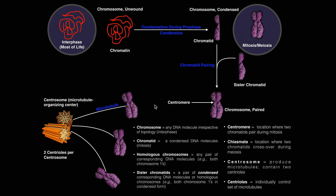Hopefully this video gave you a good understanding of the terms and when they are used. A lot of the terms that refer to DNA just differ based on what phase of the cell cycle you're in: if you're in interphase, it's chromatin; if it's during cell division, it's a chromatid — condensed and wound up. But remember, when you see the term chromosome, that is just any molecule of DNA, regardless of shape or topology. Please make sure to like this video and subscribe to my channel for future videos and notifications. Thank you.